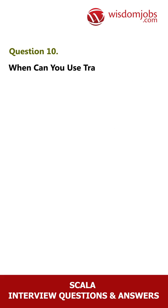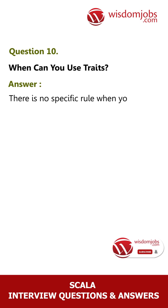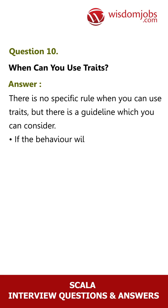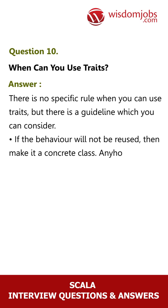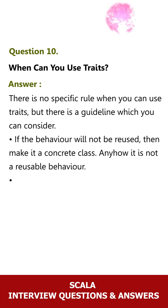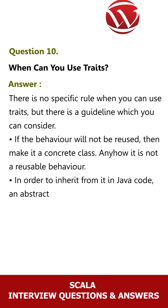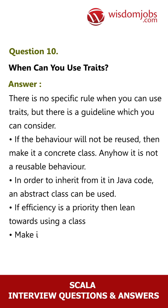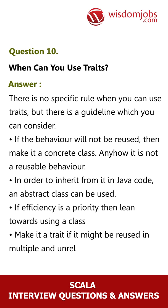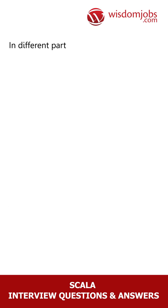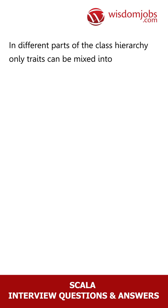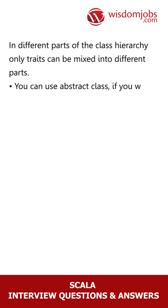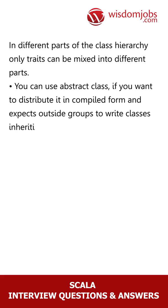Question 10: When can you use traits? Answer: There is no specific rule, but there is a guideline to consider. If the behavior will not be reused, then make it a concrete class. To inherit from it in Java code, an abstract class can be used. If efficiency is a priority, lean towards using a class. Make it a trait if it might be reused in multiple and unrelated classes. In different parts of the class hierarchy, only traits can be mixed in. You can use an abstract class if you want to distribute it in compiled form and expect outside groups to write classes inheriting from it.